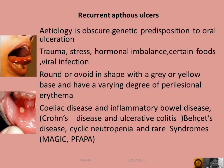The etiology for recurrent aphthous ulcers is obscure. Predisposition genetically to oral ulcerations may be present. Trauma, stress, hormonal imbalance, certain foods, and viral infections can trigger ulcers. Ulcers may be round or oval in shape with a grey or yellow base and have a varying degree of perilesional erythema.